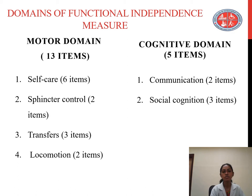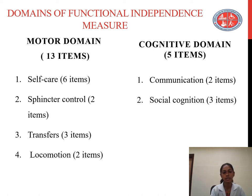The domains of Functional Independence Measure: it has two main domains, motor domain and cognitive domain. The motor domain has 13 items while the cognitive domain has 5 items. The motor domain includes self-care which has 6 items, sphincter control 2 items, transfer 3 items, and locomotion 2 items. The cognitive domain, which has 5 items, includes communication with 2 items and social cognition with 3 items.